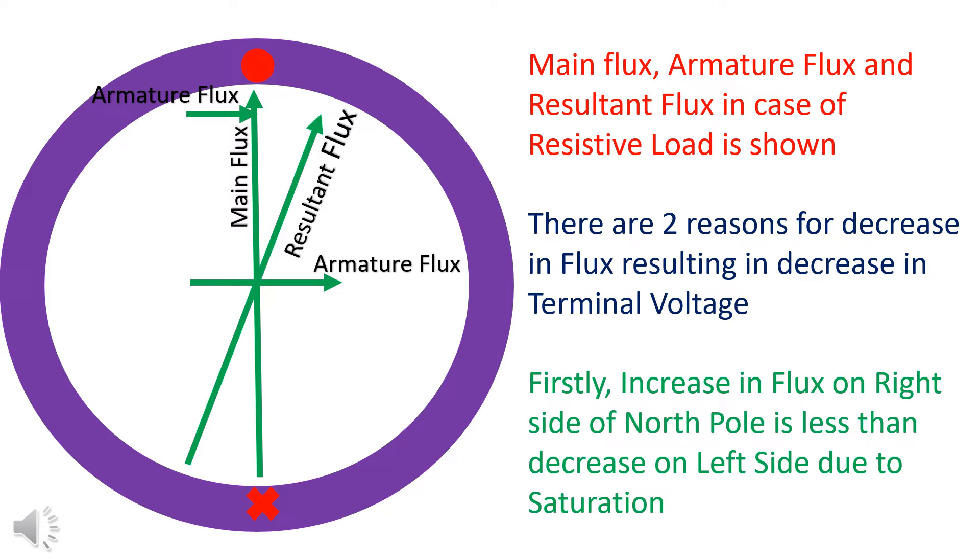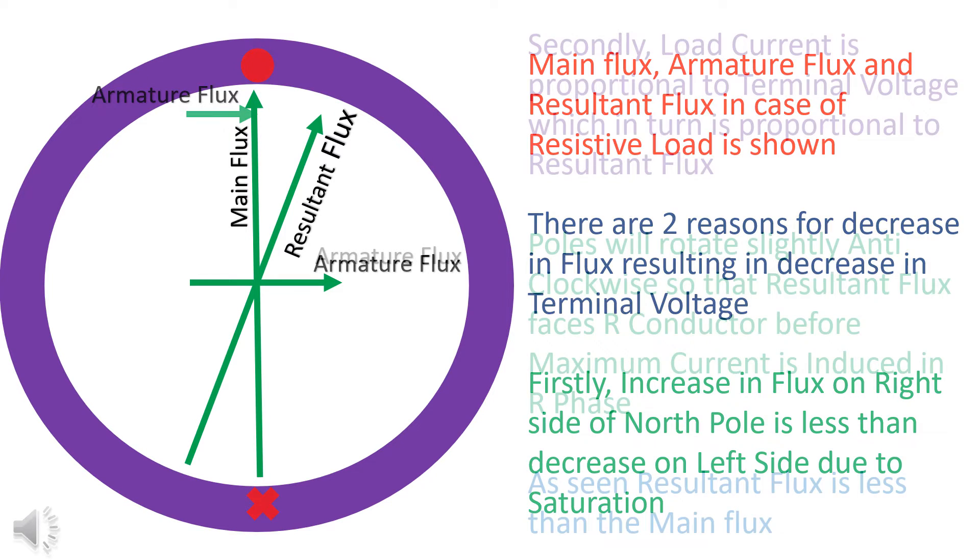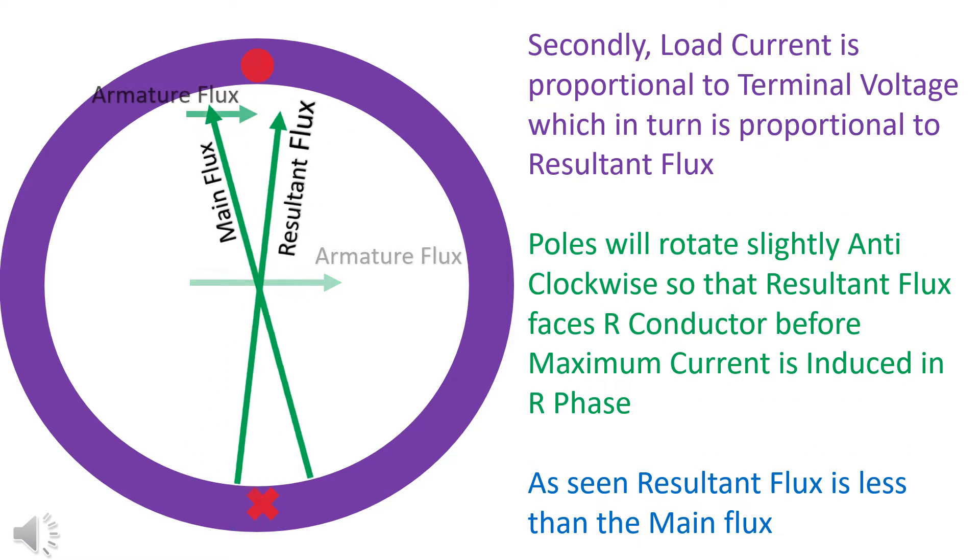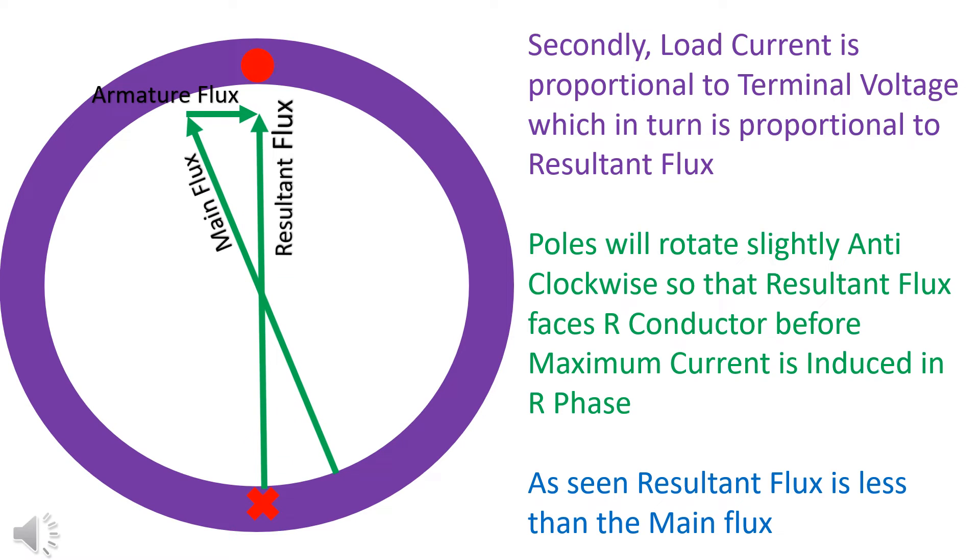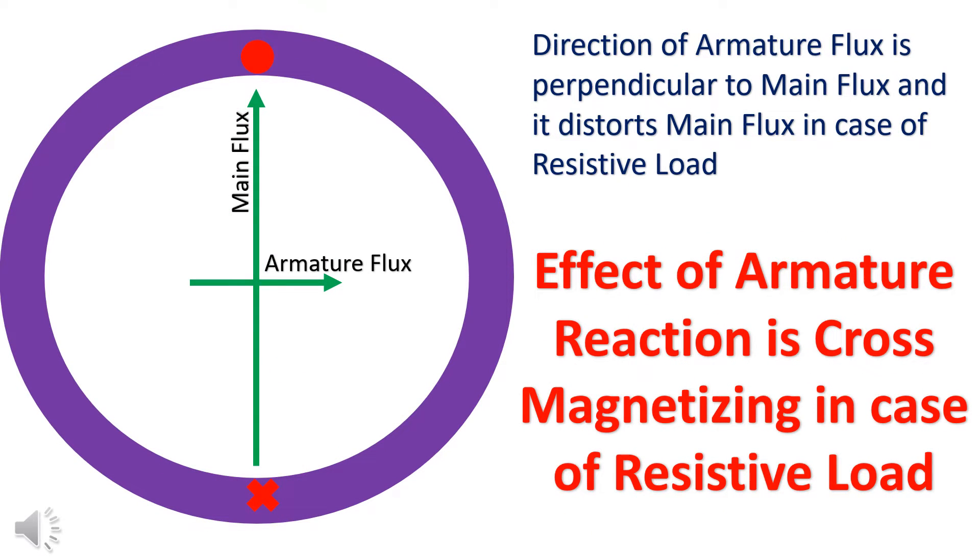There is slight decrease in the average flux. Firstly, increase in flux on one side is less than that on the other side due to saturation. Secondly, resultant flux is a phasor sum of the main flux and the armature flux. Resultant flux is less than that of the main flux. Since in the case of resistive load, there is increase in flux on one side and decrease in flux on the other side of coil, the effect of armature reaction is cross-magnetizing.